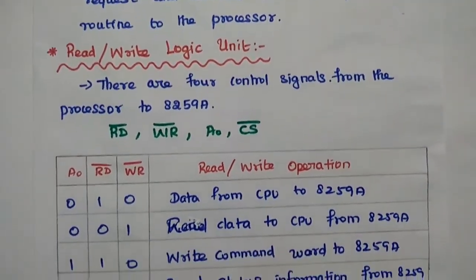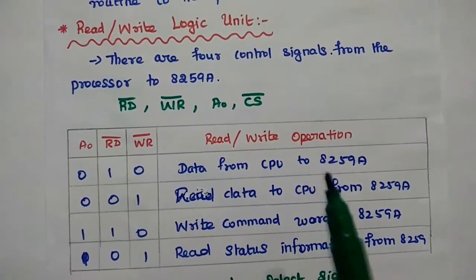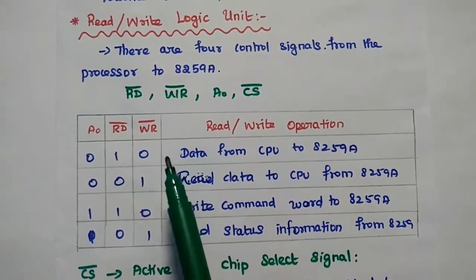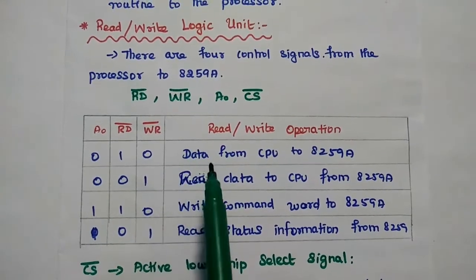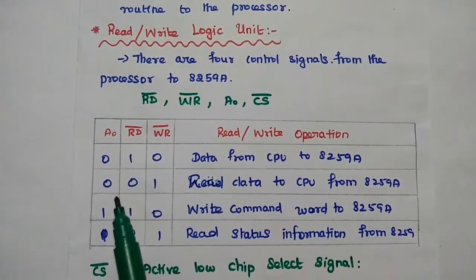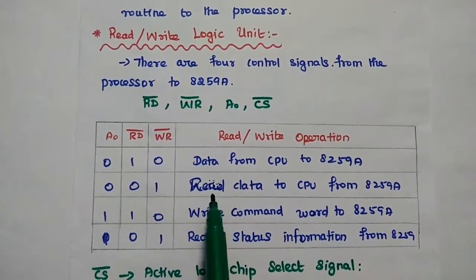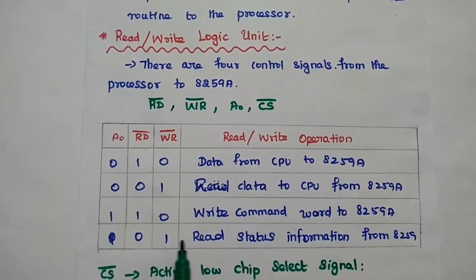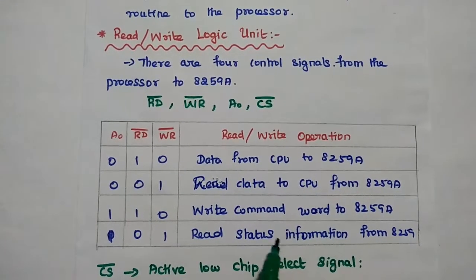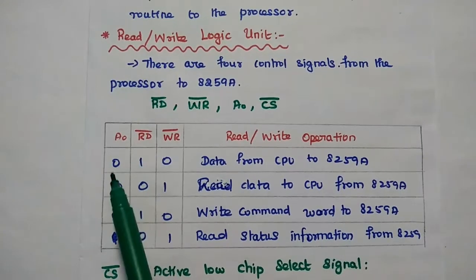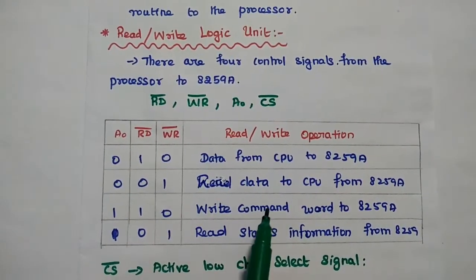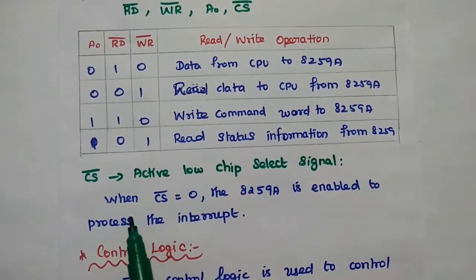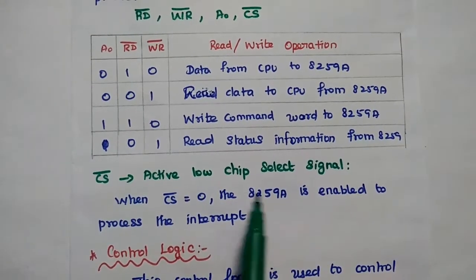The read/write logic control unit has four control signals from the processor: read bar, write bar, A0, and chip select bar. These bits select the operation of the 8259. If the combination is 010, data from CPU is written to the 8259A. If 001, it reads data from 8259 to CPU. If 110, it writes a command word to 8259A. If 101, it reads status information from 8259. If A0 equals 0, it represents data values; if A0 equals 1, it represents command word or status information.